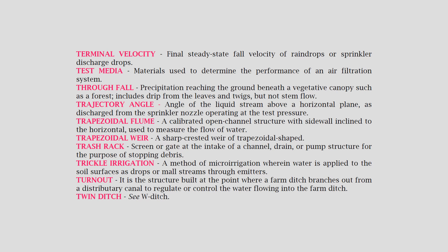Trickle irrigation: a method of microirrigation wherein water is applied to the soil surface as drops or small streams through emitters. Turnout: the structure built at the point where a farm ditch branches out from a distributary canal, to regulate or control the water flowing into the farm ditch.